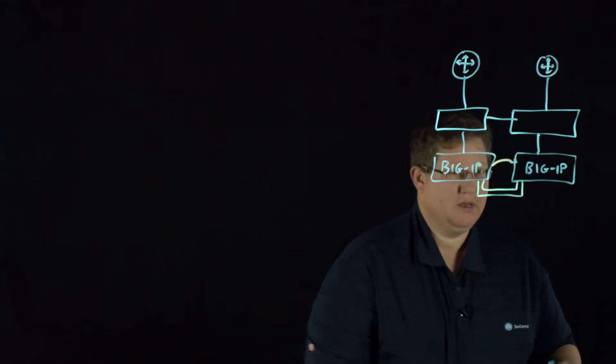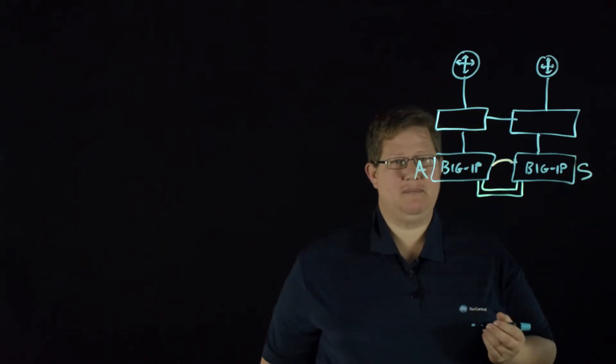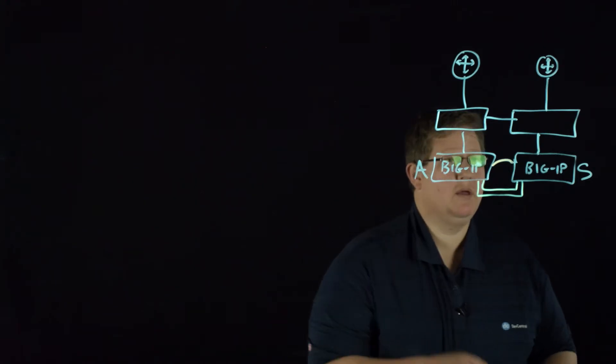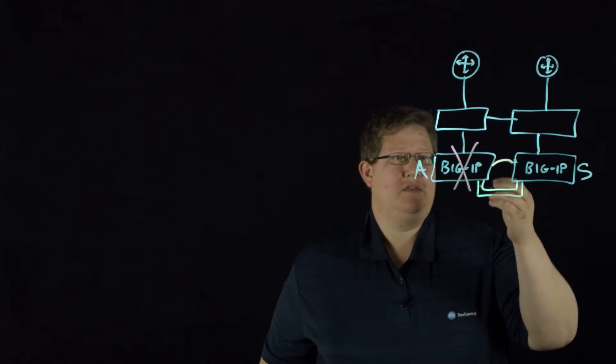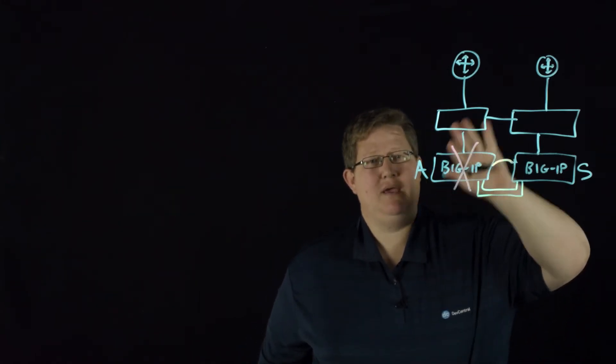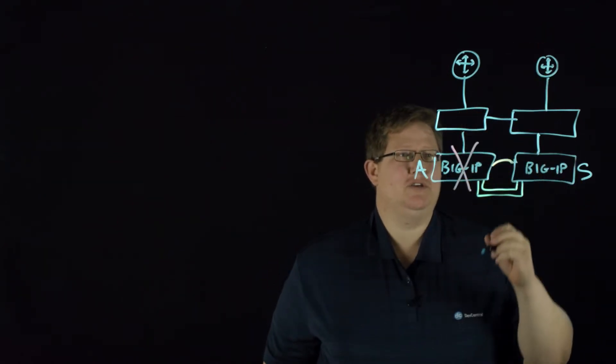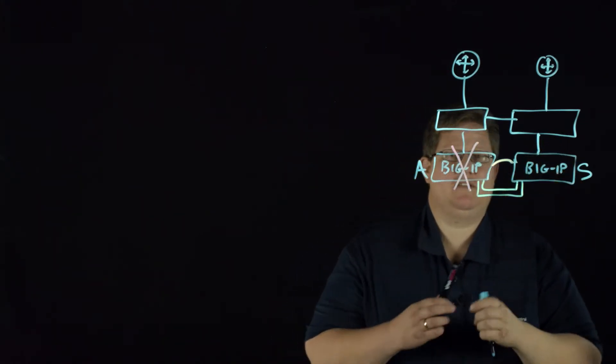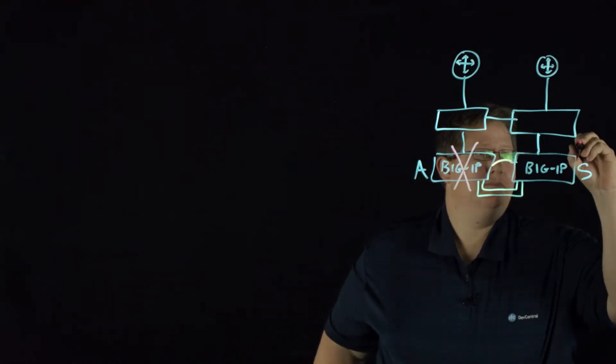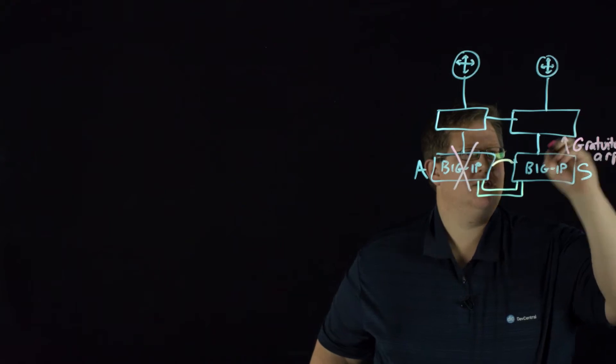So if we say that this guy is your active BIG-IP and this is your standby BIG-IP, at the point where this BIG-IP fails, if you have MAC Masquerade configured, the MAC address that this BIG-IP was using for egress traffic into these switches will then be ARPed gratuitously from this guy. So this guy, when this fails, it's this ARP up to this switch.